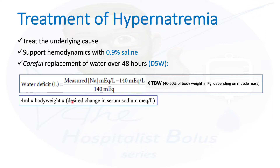A simpler equation: if the patient's sodium is 150 and you want to go to 140, the desired change is 10. Multiply 10 by body weight — if the patient is 100 kg, that's 1,000 — then multiply by 4, giving you about 4 liters of water to be given over 48 hours.